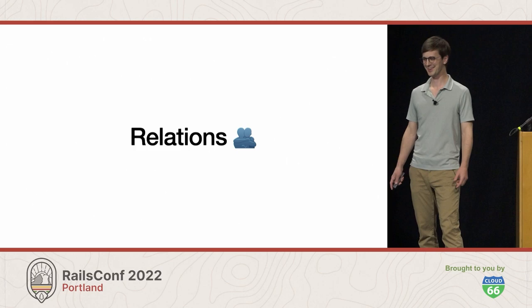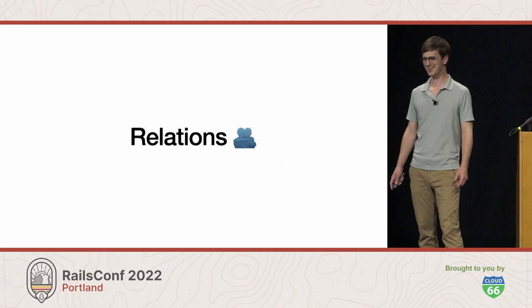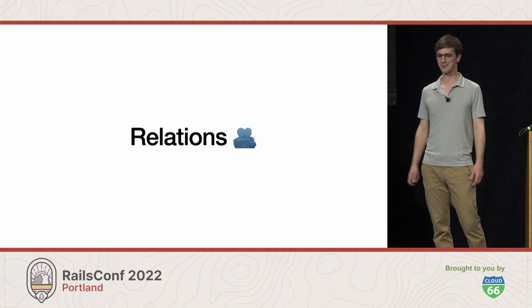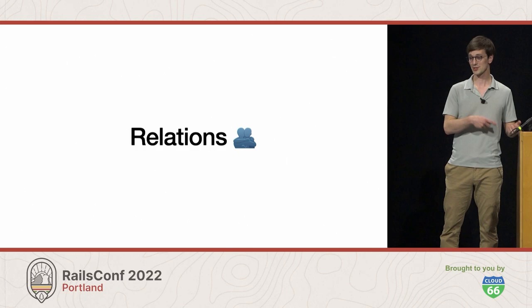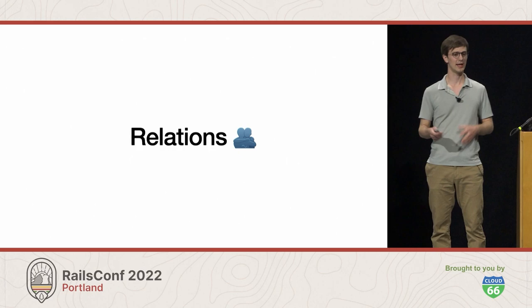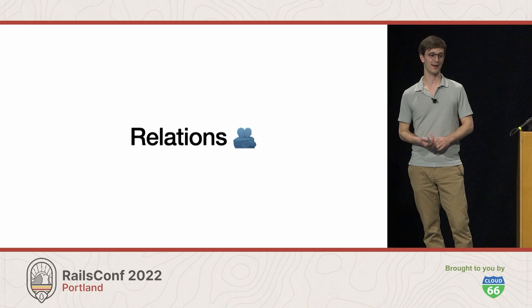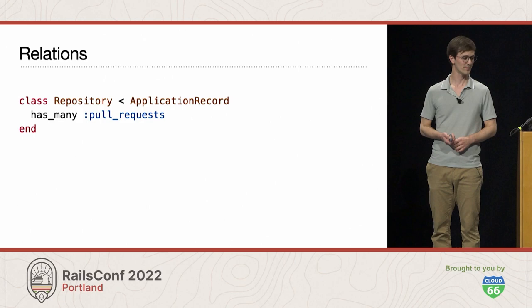Now into the has_many association. The has_many association is going to start out very similar to belongs_to, but we're going to bump into this other part of ActiveRecord called the relation, and it's going to get a little complicated — so bear with me. I think it ends up being pretty neat at the end.